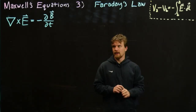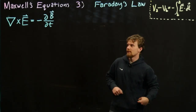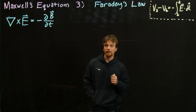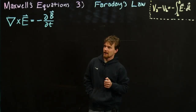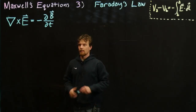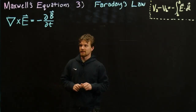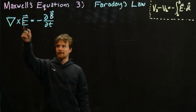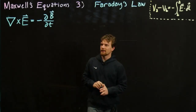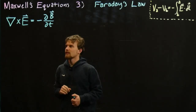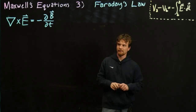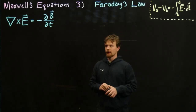I'm Zach with HKN and today we're going to continue our series on Maxwell's equations. We're up to the third one — this one's called Faraday's Law. This is the differential form of Faraday's Law. This is the first time in these videos that we see an electric field term and a magnetic field term in the same equation, and we also see a time derivative. So now we're into electrodynamics.